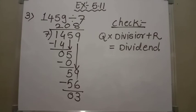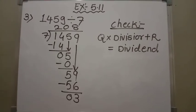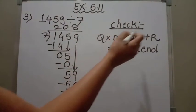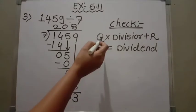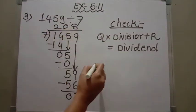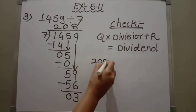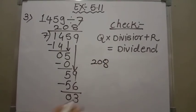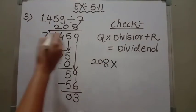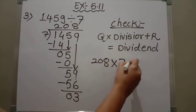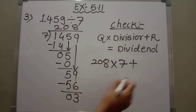Now let us check this division by using the formula: quotient times divisor plus remainder equals dividend. Here the quotient is 208. So I am going to substitute the value of quotient into divisor, which is 7, plus remainder. Remainder is 3.